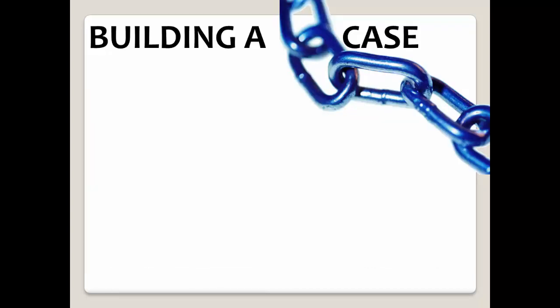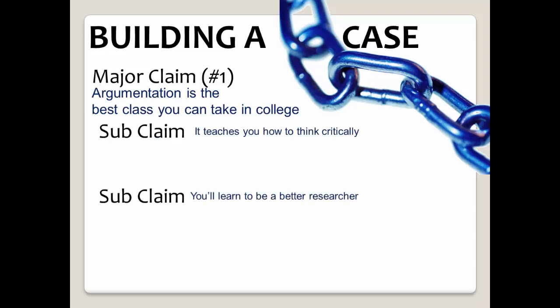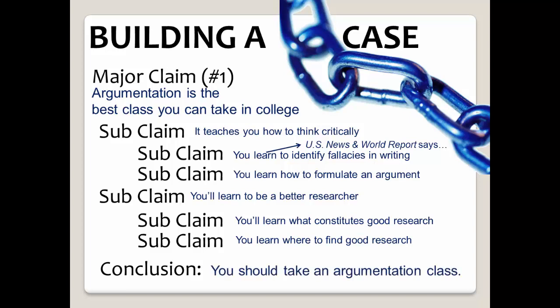Here's a visual representation of building a case. You would have a major claim: 'Argumentation is the best class you can take in college.' You would support that major claim with sub-claims, such as 'it teaches you how to think critically' and 'you'll learn to be a better researcher.' Each of those claims might be supported with other claims and with evidence. In this example, you are building a case to support another claim — the conclusion — and attempting to influence or persuade you to take an argumentation class.